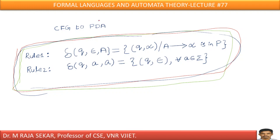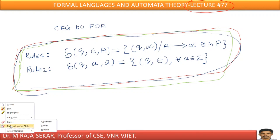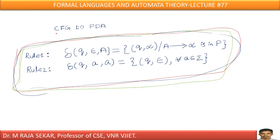My dear friends, welcome to Rajashekar classes on formal languages and automata theory. This is lecture number 77. In this lecture, we will try to understand conversion of context-free grammar to pushdown automata.